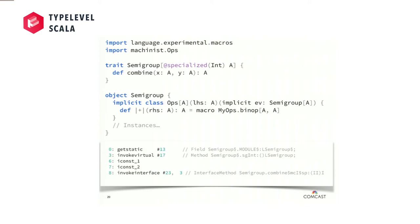If we look at the same execution when using Machinist, we can see this is basically as good as we're gonna get. The getstatic and invokevirtual are just looking up our instance — our semigroup int instance which happens to be in the companion object. We have two constant loads and a single invokeinterface. Machinist really solves this problem of type class performance as it relates to infix notation.